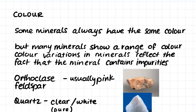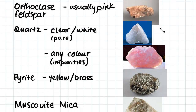Here are a few examples of different minerals and their colours. Orthoclase feldspar is usually found to be pink. Quartz, when it is quite a pure mineral and doesn't contain any impurities, will be found to be a white or a clear colour. When quartz contains impurities it can be pink or many different colours.